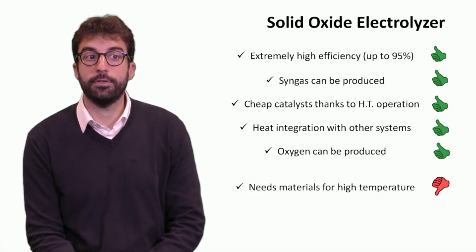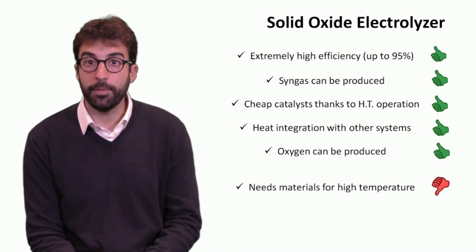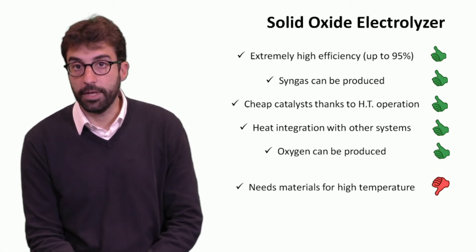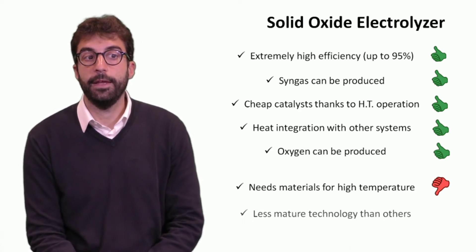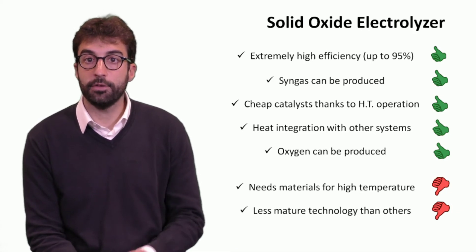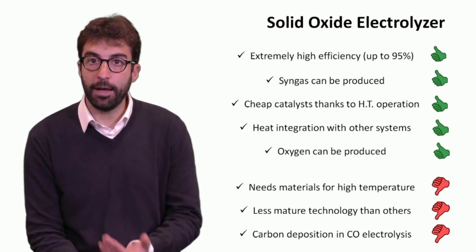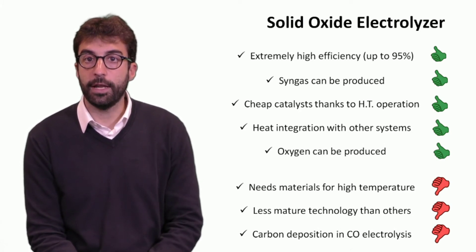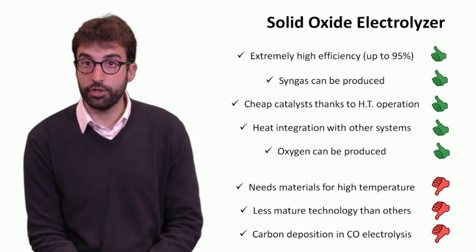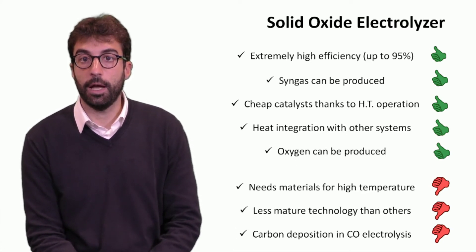Looking at the drawbacks: we have a lot of issues related to high temperatures—related to type of materials, compatibility and stress related to steel and ceramic materials together. It's a totally new technology compared to PEM electrolyzer or alkaline electrolyzer, so it's less mature. Finally, in CO2 electrolysis, nickel can catalyze additional reactions, but in some cases it can also cause carbon deposition and degradation of the material.